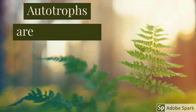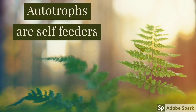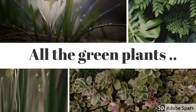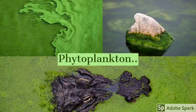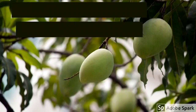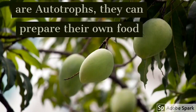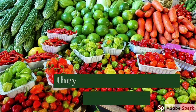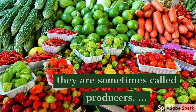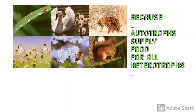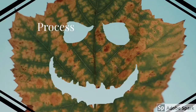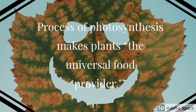Autotrophs are the self-feeders. All green plants, cyanobacteria, and phytoplankton are autotrophs — they are capable of preparing their own food. They are sometimes called producers because autotrophs supply food for all heterotrophs. The process of photosynthesis makes plants the universal food provider.